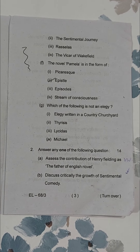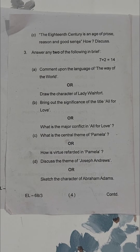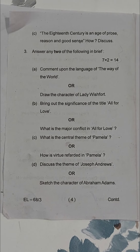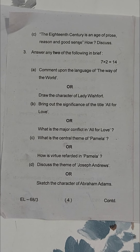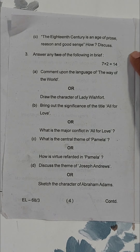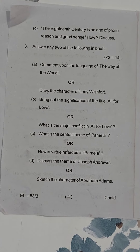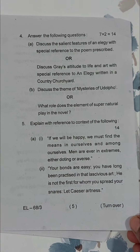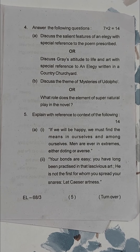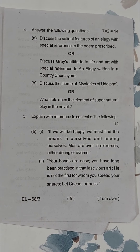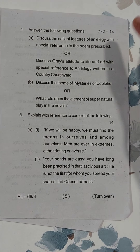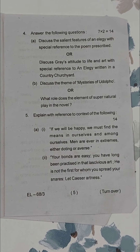Once you are done with the MCQs, moving forward we have question number two where you have to answer any one question of 14 marks — you get three options, which is quite appropriate for students. In question number three you have to answer two questions of seven marks each, and you have options A, B, C, D. Moving forward in page five, the same pattern continues — two questions of seven marks, one from A and one from B.